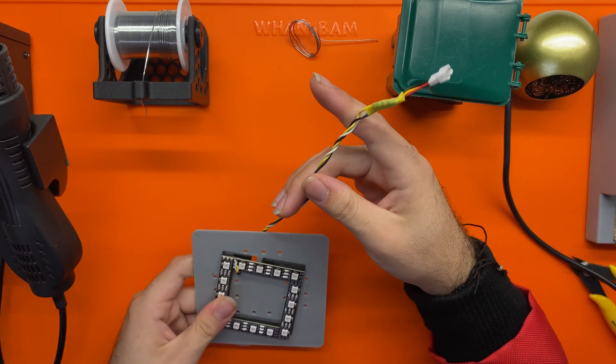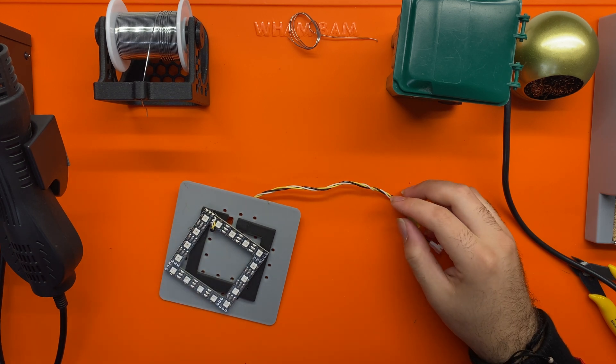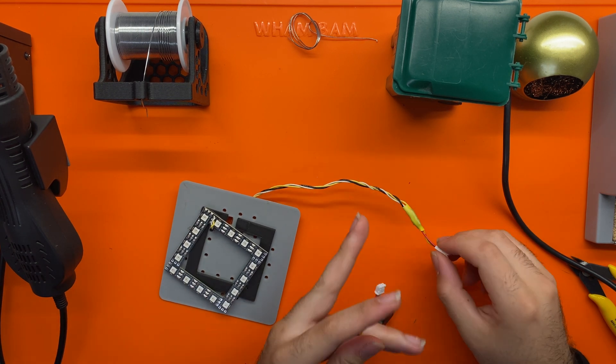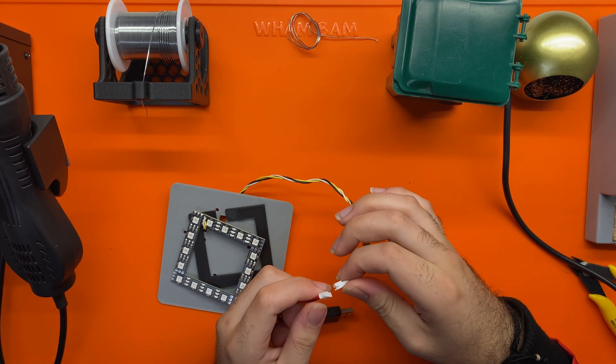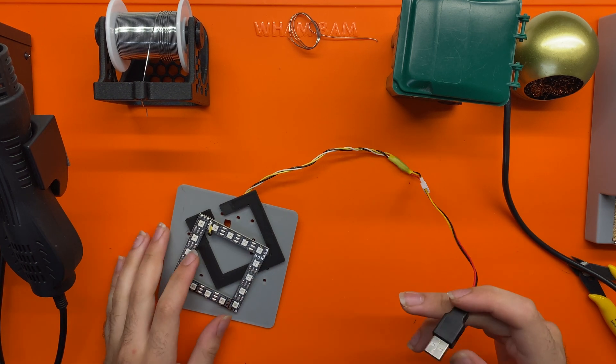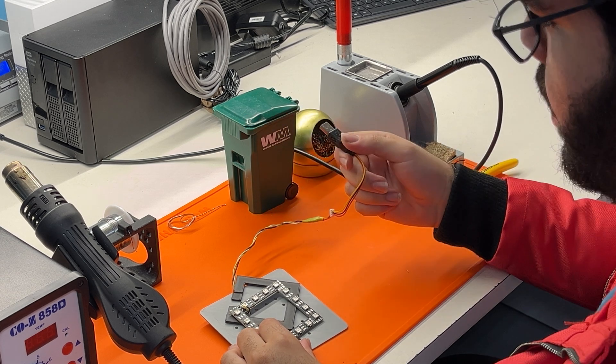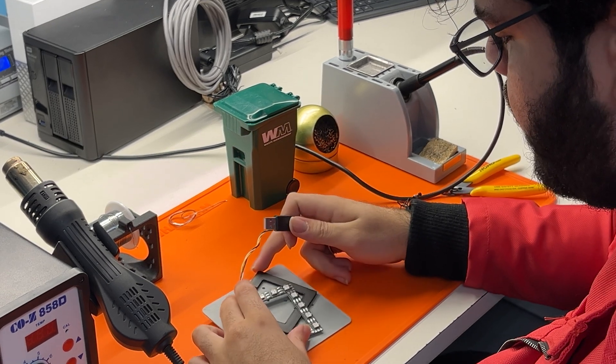So now we have the base square completed. We can connect the USB. And if you'd like at this point, you can verify that it works by plugging it into any five-volt output.